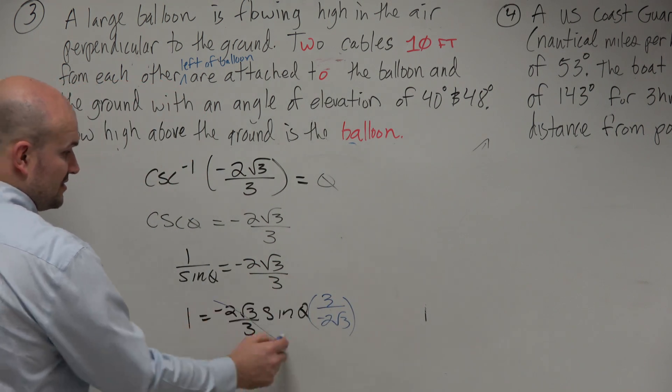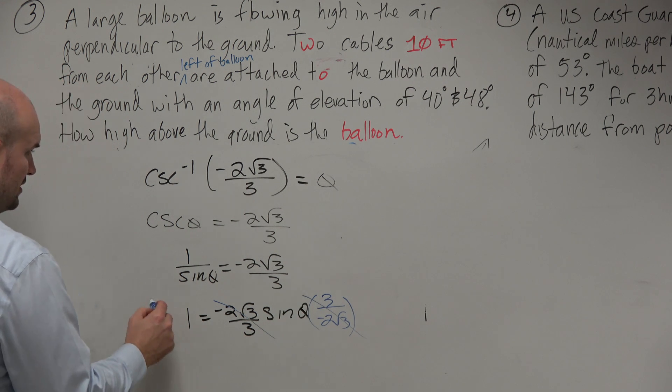Because again, that's the reciprocal of this. So guess what? Those multiply to 1. And then you're left with 3 over negative 2 square root of 3.